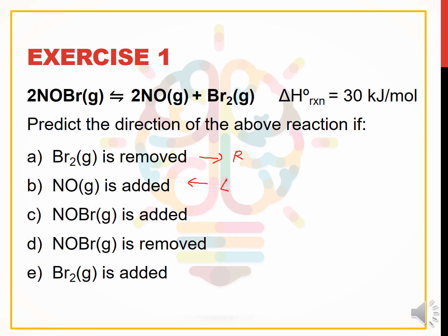If NOBr gas is added, NOBr is in the reactant position, so we produce less of NOBr and shift to the right. If NOBr gas is removed, we produce more NOBr, and since it is in the reactant position, we shift to the left. If Br₂ gas is added, we produce less of bromine, so we shift to the left.